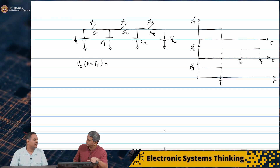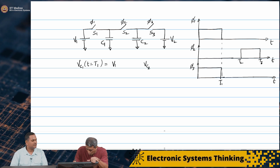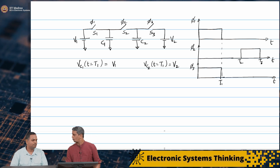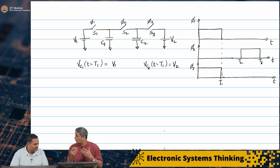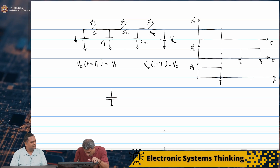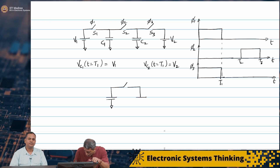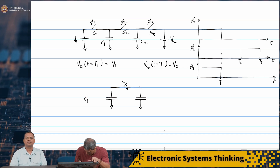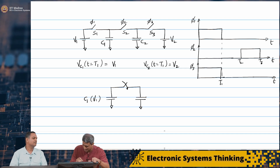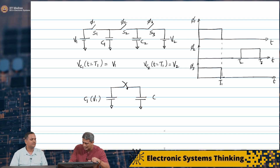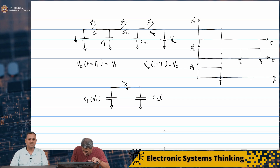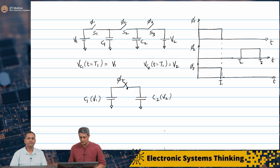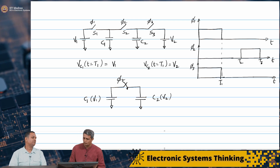vc1 at t equal to T1 is going to be V1, and vc2 at t equal to T1 is V2. Now we turn on phi 2 and we want to see what happens to the system. So C1 is initially charged to V1 — in brackets I am putting the initial charge at t equal to T2 minus — and C2 charged to V2. That switch is controlled by phi 2. Now what happens when you turn on phi 2?